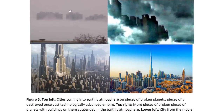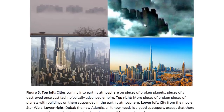Here you can see the cities that are coming into the Earth's atmosphere on pieces of broken planets — pieces of the destroyed, once vast, technologically advanced empire, a galactic empire. Here's another one: more broken pieces of planets with buildings on them, suspended in the Earth's atmosphere. It remains suspended for a while because the matter is low in gravitational energy. The position of matter inside the gravitational field of a planet is not determined by its density, but by how much gravitational energy it contains. So they slowly absorb energy and slowly sink down towards the surface of the Earth.